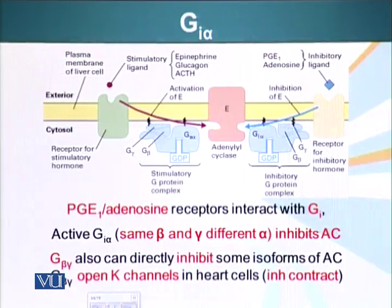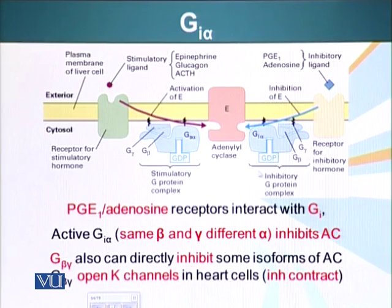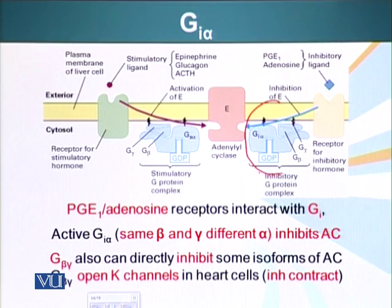There are, for example, GI-proteins. The ones we talked about earlier are the GS-proteins, which stimulate adenyl cyclase. GI-proteins, on the other hand, inhibit adenyl cyclase. GS-proteins can be activated by, for example, epinephrine, glucagon, and ACTH.